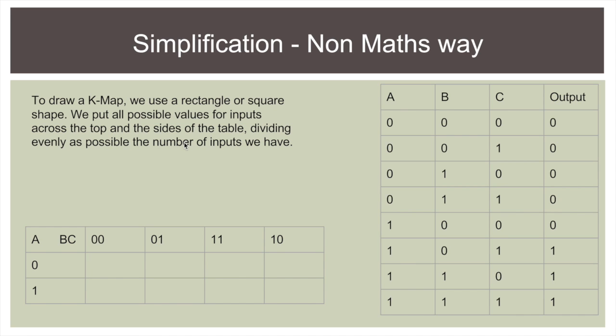So during a K-map, we use a rectangle or square shape. And we put all possible values for inputs across the top and the sides of the table, dividing evenly as possible the number of inputs we have. So here I've got A, 0 and 1 because a single input can only have two values. And here I've got B C.